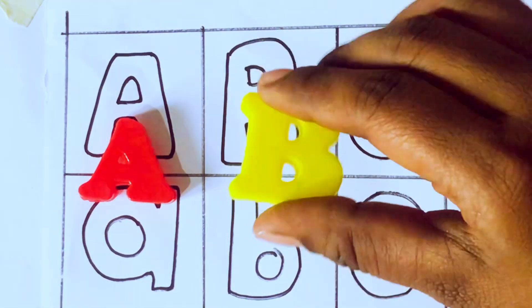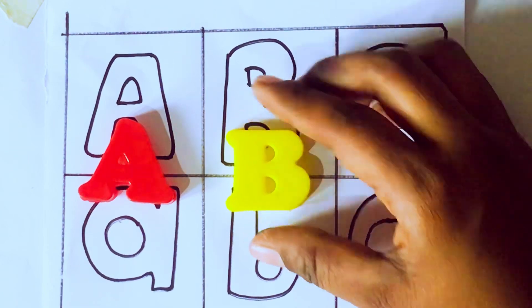Next, B. Which letter kids? B. B for ball. B-A-L-L, ball.